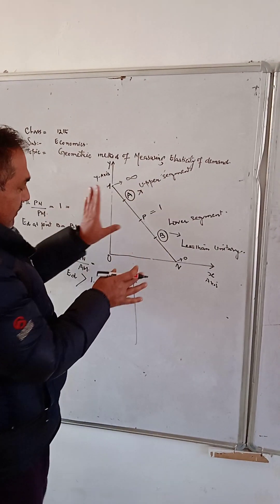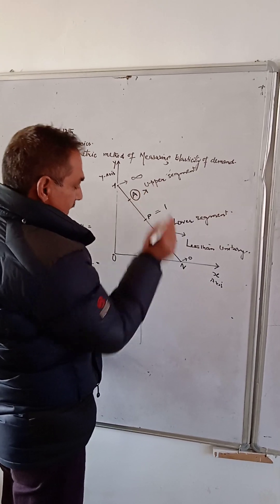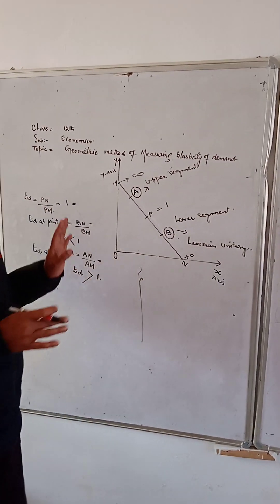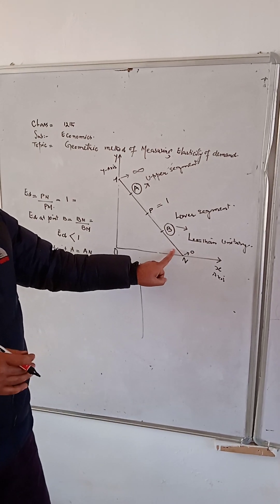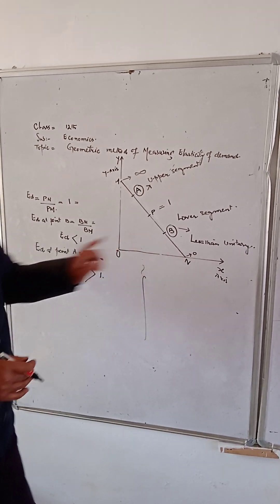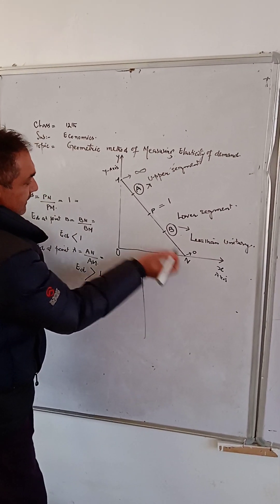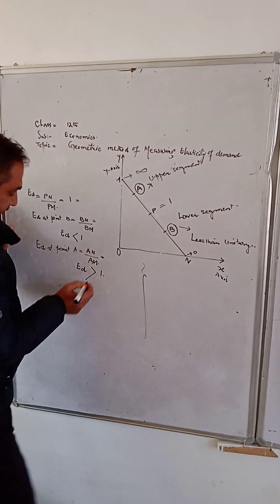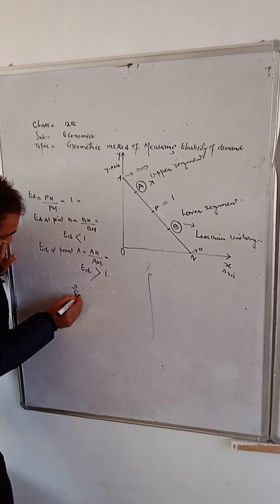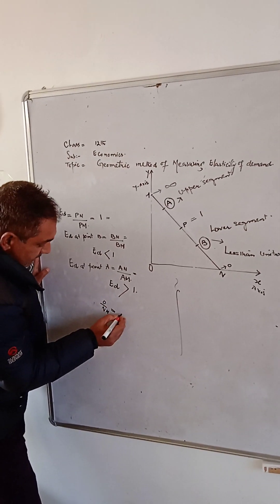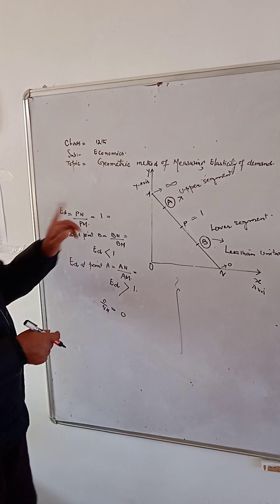These are the three cases: less than 1, equal to 1, and greater than 1. If we proceed further and measure elasticity of demand at point N, this will be 0 divided by N-M. At this point, elasticity of demand will be equal to 0, since 0 divided by anything is equal to 0.